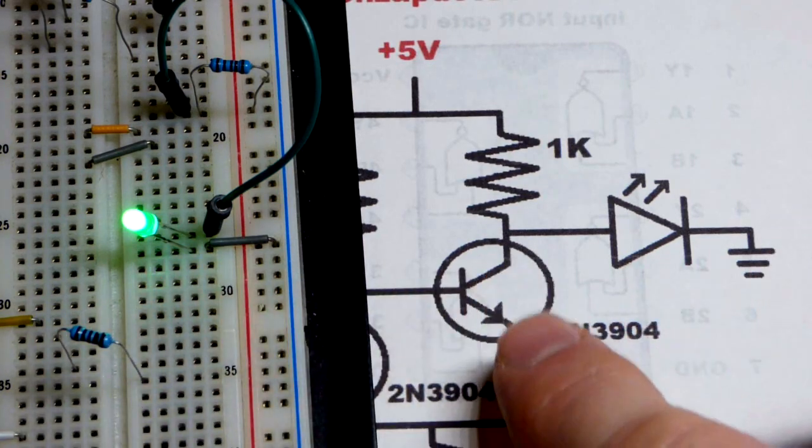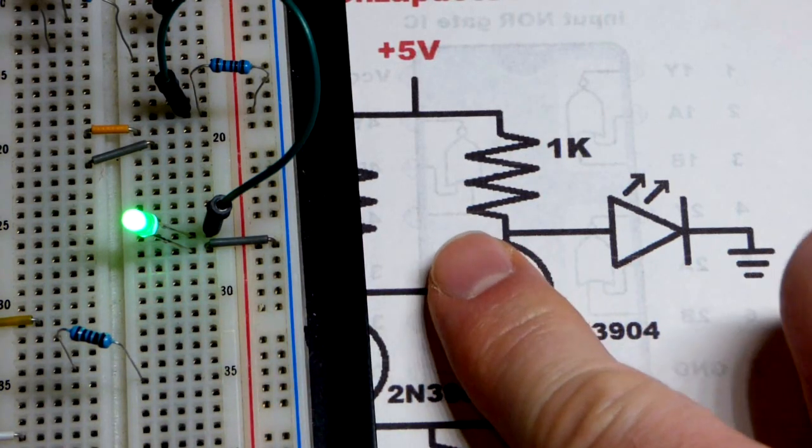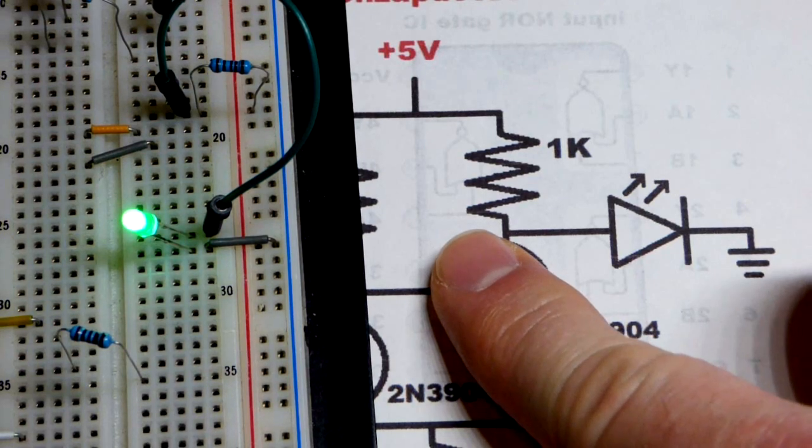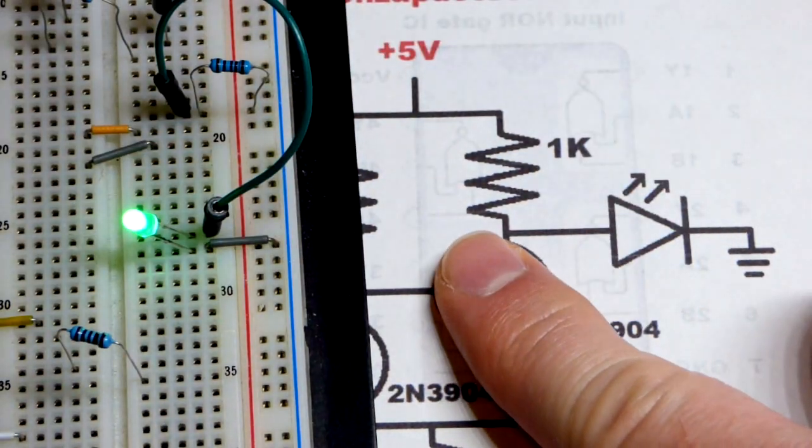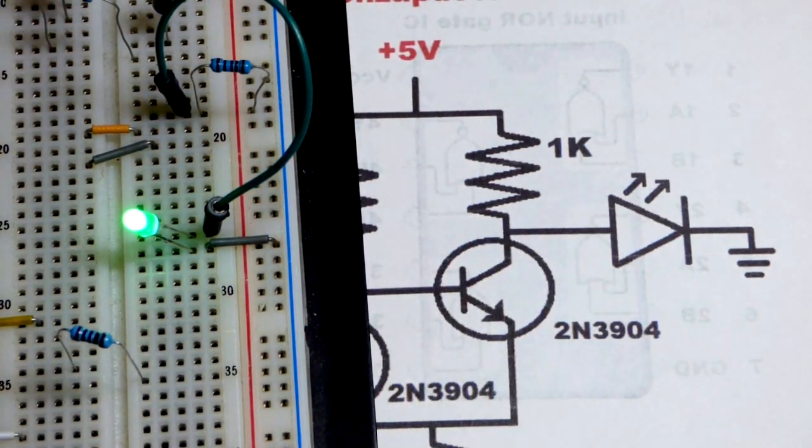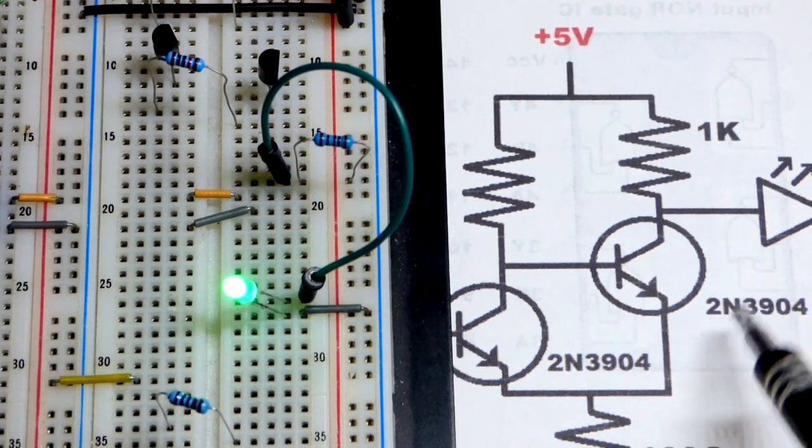When the transistor is off it'll be like it doesn't exist here. You can see that why the LED will be on while the transistor is off.